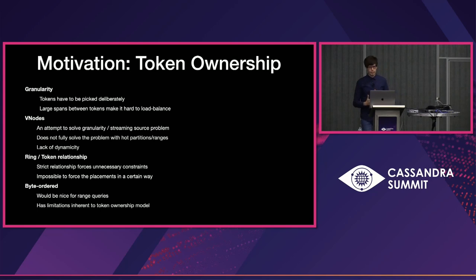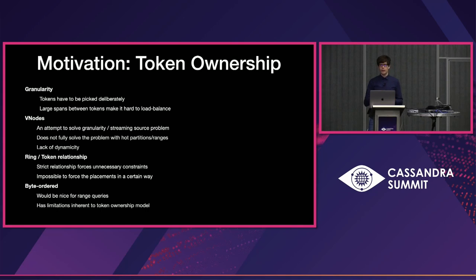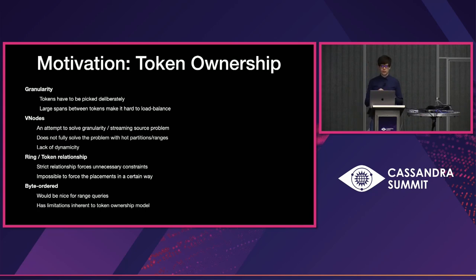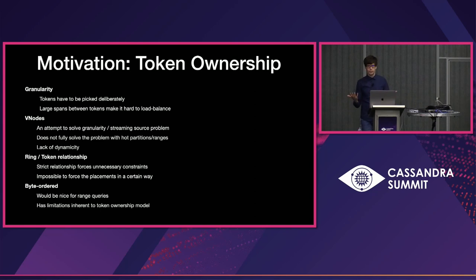VNodes were an attempt to address the granularity issue and did allow picking multiple sources for streaming, but they have not completely eliminated the load balancing problem. The ultimate goal is to have a way to gradually and dynamically relocate data. The second problem is that token ownership makes a node's position in the ring, alongside the replication factor, dictate which ranges it owns — meaning you cannot pick a subset of nodes for a specific range without doing token arithmetic.